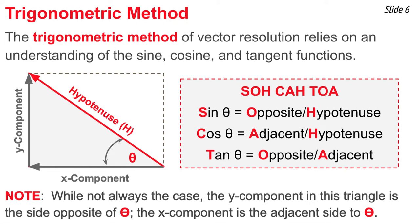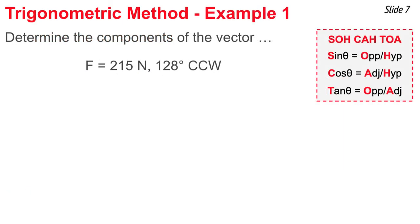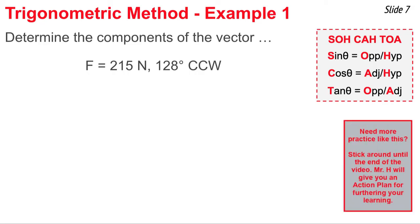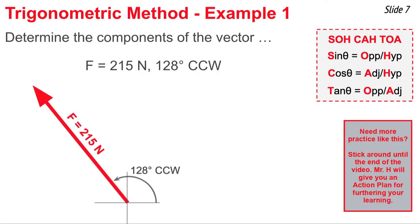While it's not always the case, in this right triangle as we've defined theta, the y component happens to be the side opposite theta, and the x component is the side that's adjacent to theta. I will now demonstrate the use of the trigonometric method to determine the components of this force vector having a magnitude of 215 newtons and a direction of 128 degrees counterclockwise from east. I'll begin by drawing this northwest vector.